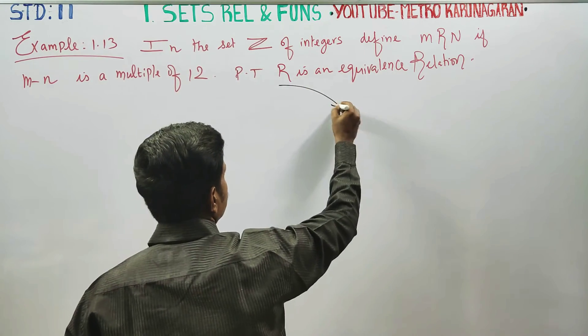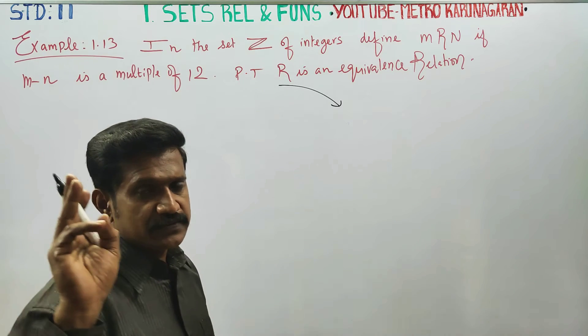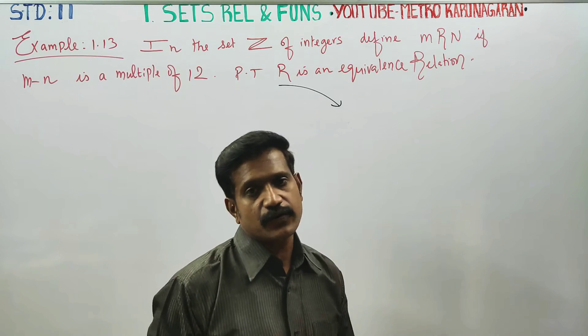To prove equivalence relation, we need three proofs: reflexive proof, symmetric proof, and transitive proof.